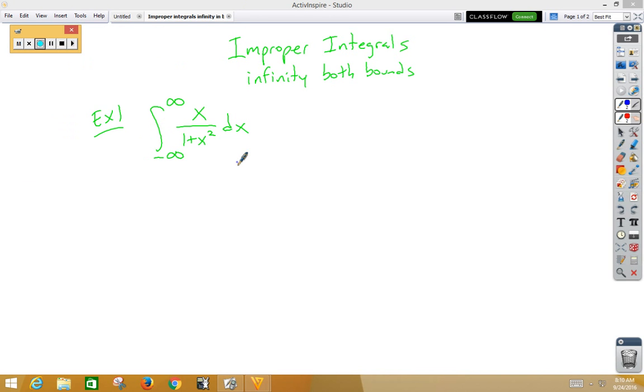In this video, we're doing improper integrals with an infinity in both bounds. So in this case, what we need to do is we need to pick a convenient x value between negative infinity and positive infinity to split this thing up into two integrals.